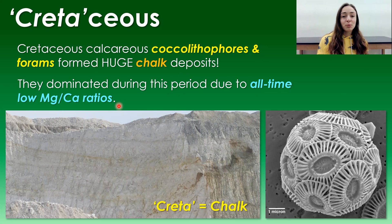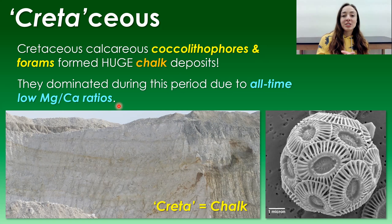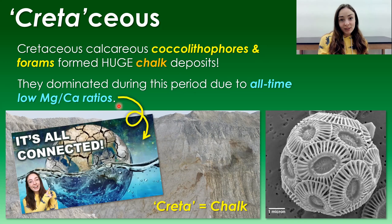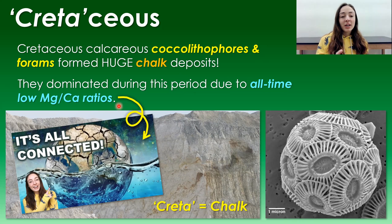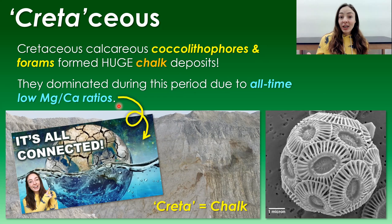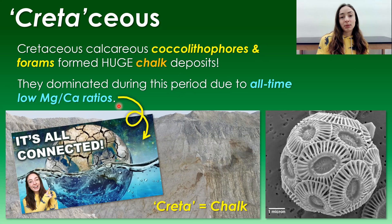The reason they accumulated in such large amounts is due to an all-time low in the magnesium to calcium ratio of the oceans — this has to do with the rate of ocean crust formation and alteration at mid-ocean ridges. The low magnesium to calcium ratio favored calcite precipitation over aragonite precipitation, and since these organisms precipitated calcite, they dominated during this time.